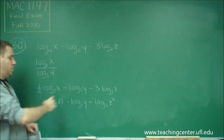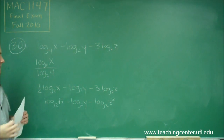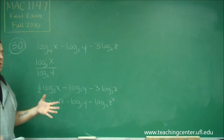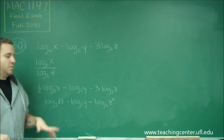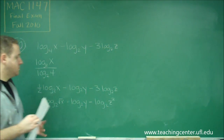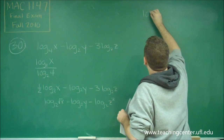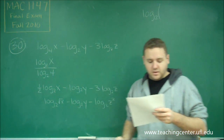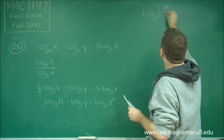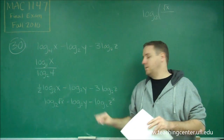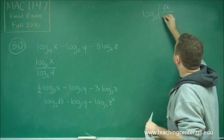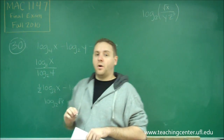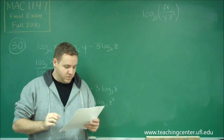Now everything is log base 2 and we've removed all coefficients, so we can combine. In a string of logarithms with the same base, anything positive goes to the numerator and anything negative goes to the denominator — a negative means you're dividing by that term. So we condense everything into a single log base 2 of root x over y z cubed. That is answer choice D.